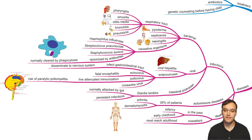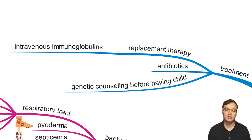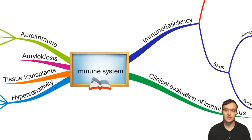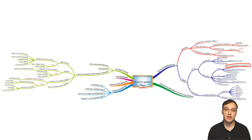Patients suffer bacterial, viral, and parasitic infections as well as autoimmune diseases and previously high death rates, but therapy now allows most to reach adulthood. Causative organisms include Haemophilus influenzae, Streptococcus pneumoniae, and Staphylococcus aureus. Treatment includes replacement immunoglobulin therapy, antibiotics, and genetic counseling. The big picture is that this is a B cell defect classified within the primary immunodeficiency branch of the immune system. Thank you very much for listening.